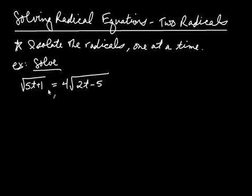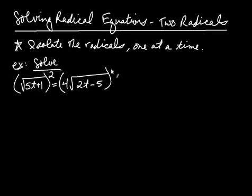Once you've isolated one of the radicals, if you're dealing with square roots — and that's all we're going to deal with here — we are going to square both sides. Once you've isolated one of the square roots, square both sides. That's going to remove the radical on the left, because the square root of 5t plus 1, squared, is just 5t plus 1.